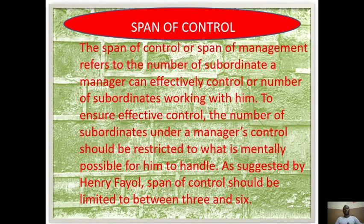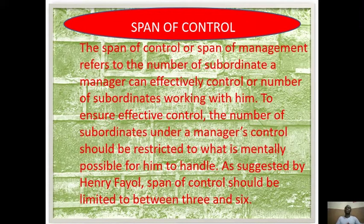Now let's look at span of control. Span of control refers to the number of people that is under the control of a particular management. Span of control or span of management refers to the number of subordinates a manager can effectively control or the number of subordinates working with him. In a school setting we have the principal, the vice-principal, and the HOD — these are heads, but in terms of authority, the principal has the higher authority and the HOD has the lesser authority.